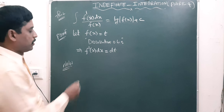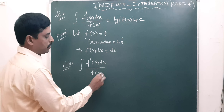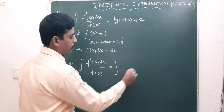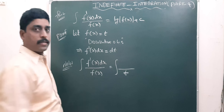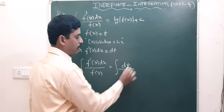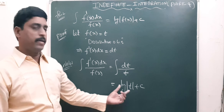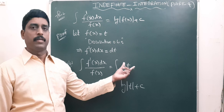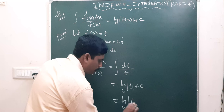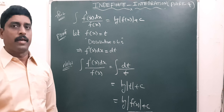So the theorem statement integral of f'(x) dx by f(x): in this theorem f(x) we write as t, and f'(x) dx in the numerator we replace with dt. So integral of dt by t, which is log t plus c, because the derivative of log t is 1 by t. In the place of t we write f(x), giving log mod f(x) plus c. Hence proved.